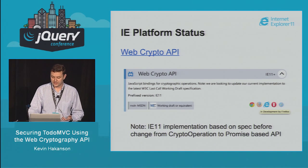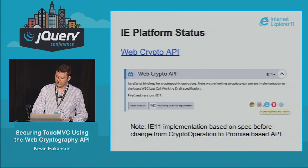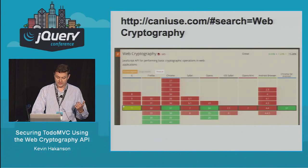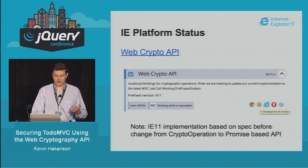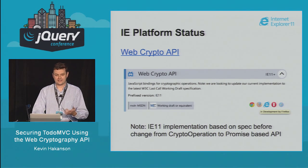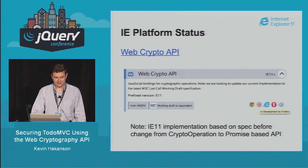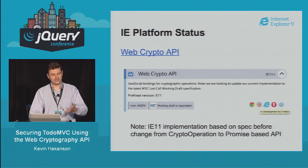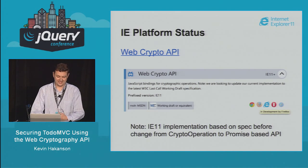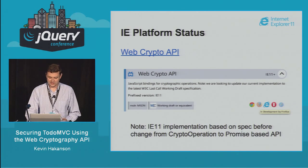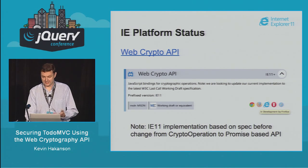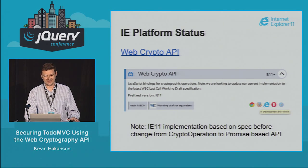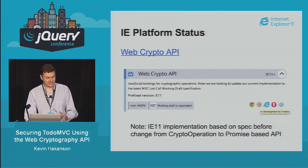There's also a platform status page listing API states across browsers. Notably, IE's implementation was based on the spec before they switched to a promise-based API. IE11 actually shipped with the crypto API first — I think in July — ahead of everyone else. But their penalty was they shipped before the spec changed to use promises in June. So they went out the door behind the times. That's the challenge of implementing things per spec — it's not finalized until browsers implement, but nobody tests it until it's in browsers, making the spec hard to change.